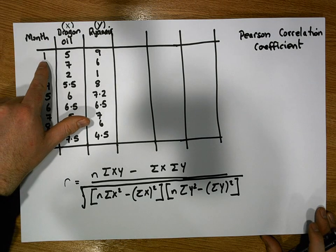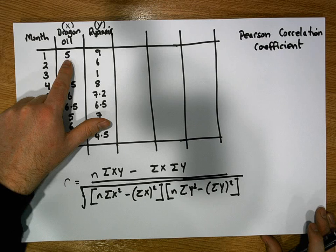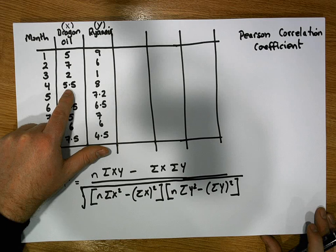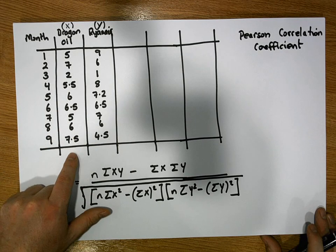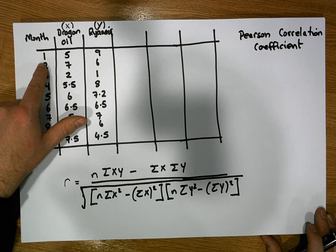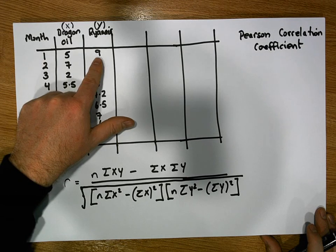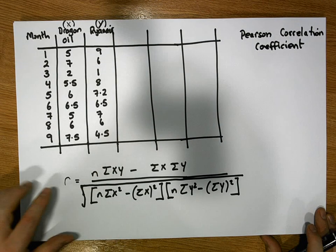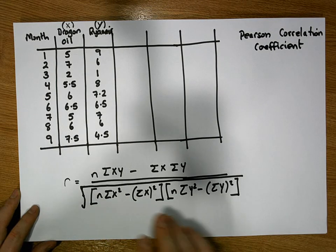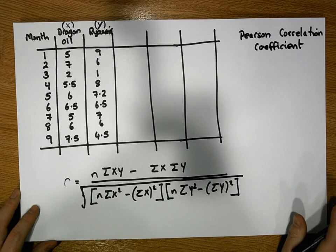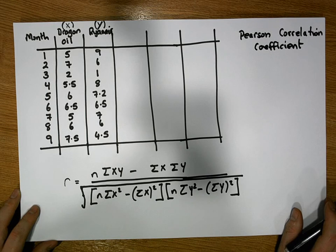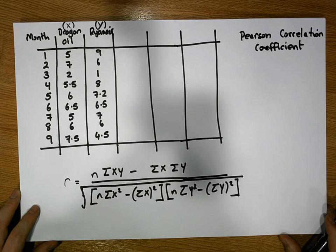For Dragon Isle, the share returns are: 5% in month 1, 7% in month 2, 2%, 5.5%, 6%, 6.5%, and so on. For Ryanair, the return was 9% in month 1, 6% in month 2, 1% in month 3, and so on. In a previous video we plotted a scatter plot as a graphical representation of the relationship between these two variables — you can refer back to that video in the series.